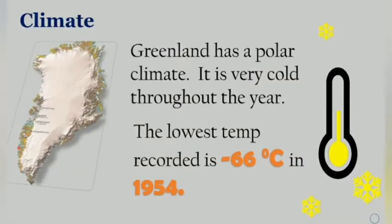Greenland has a polar climate — it is very cold throughout the year. The lowest temperature ever recorded was minus 66 degrees Celsius in 1954. There is very little rainfall, and the temperature is always below 0 degrees Celsius. During winter, one may not see the sun for several months, and there is heavy snowfall.